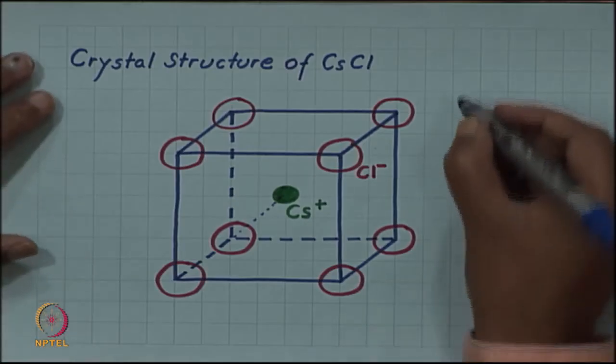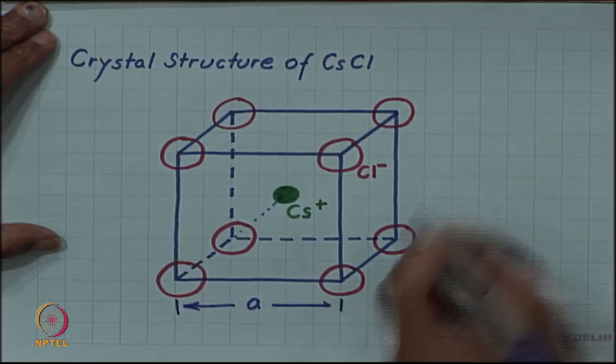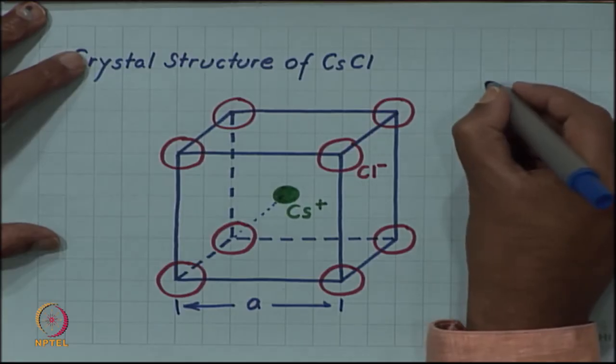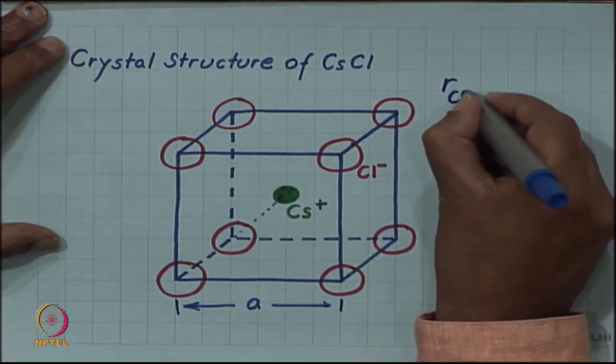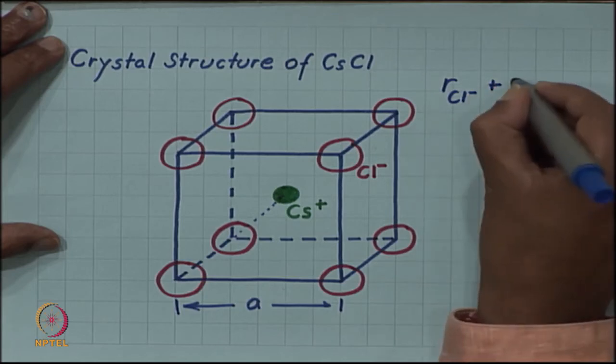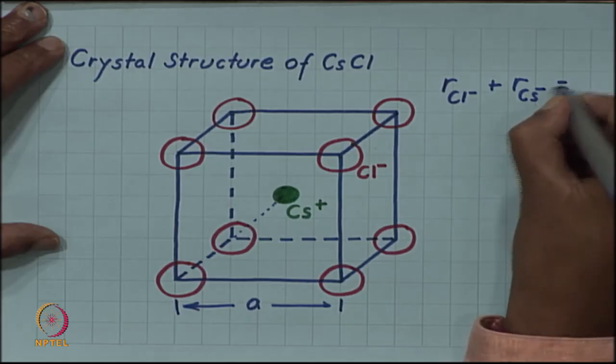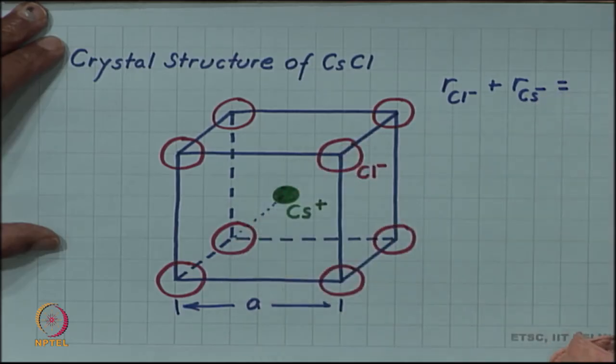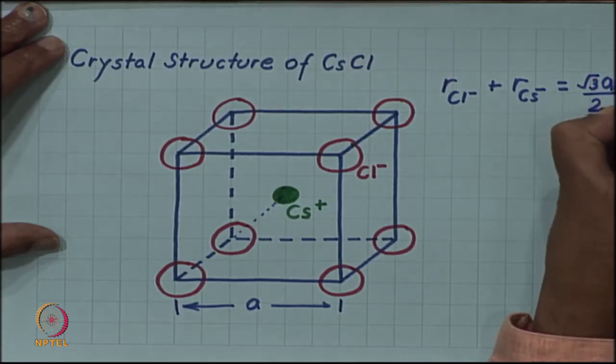We can find a relationship between the radius and the lattice parameter. The radius of chloride plus the radius of caesium should equal half the body diagonal. Since the full length of the body diagonal is root 3 a, we get root 3 a by 2.